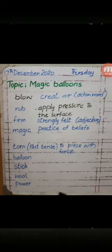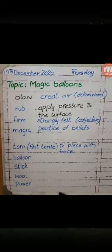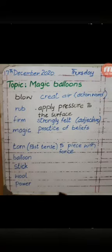The next word is 'magic' — aap ko pata hai magic kya hota hai. 'Torn' is the past tense of 'tear,' and tear means to rip with force — chote chote tukron mein karna, phar dena. These are the key vocabulary words from the lesson.